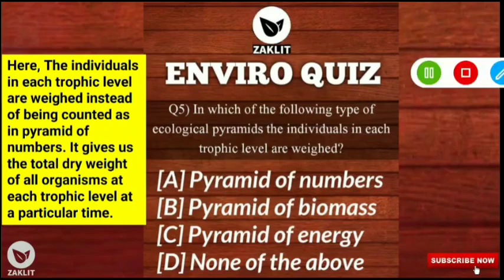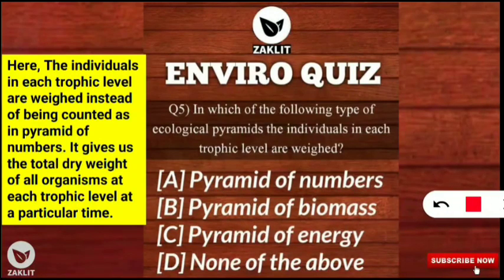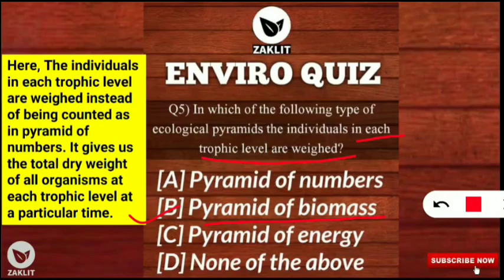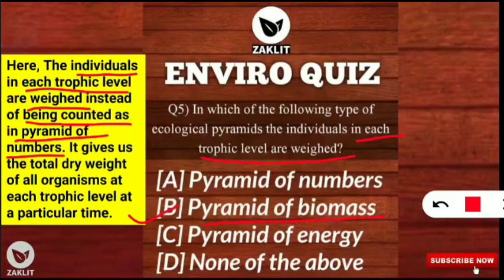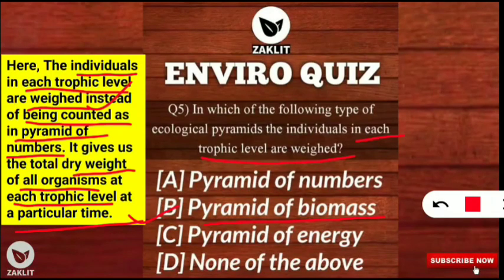The final question was: in which of the following types of ecological pyramids are the individuals in each trophic level weighed? The correct option is B — the pyramid of biomass. In the pyramid of biomass, individual species in each trophic level are weighed instead of being counted as in the pyramid of numbers. It gives us the total dry weight of all organisms at each trophic level at a particular time.